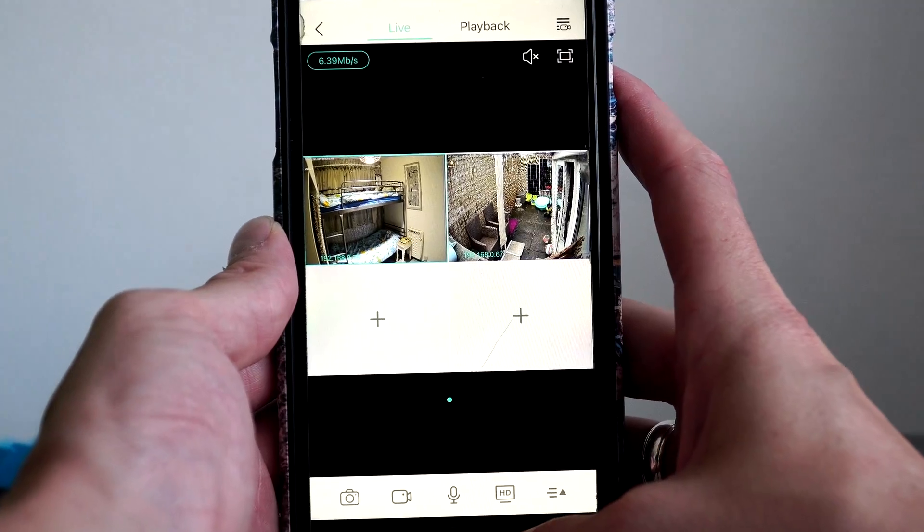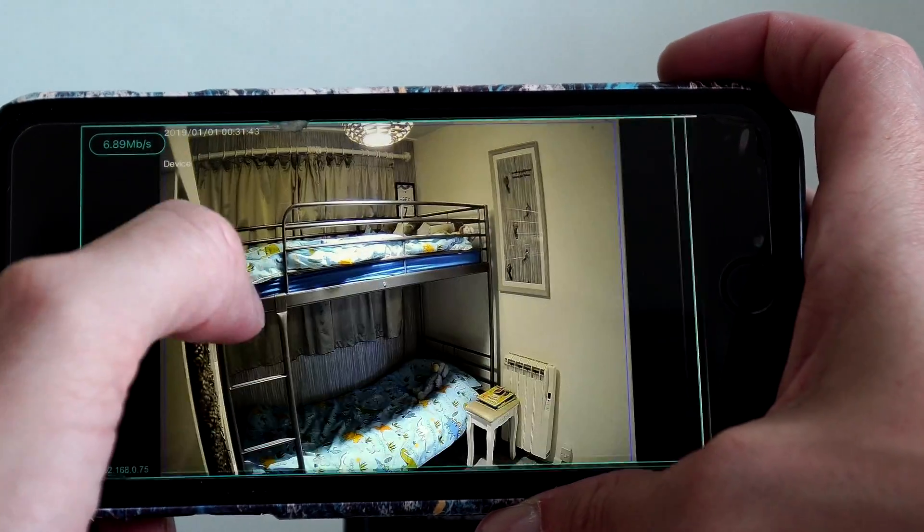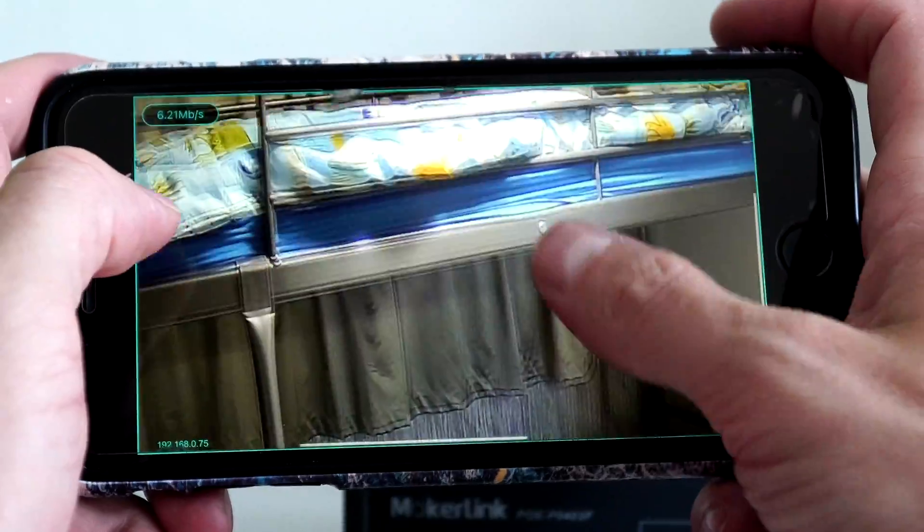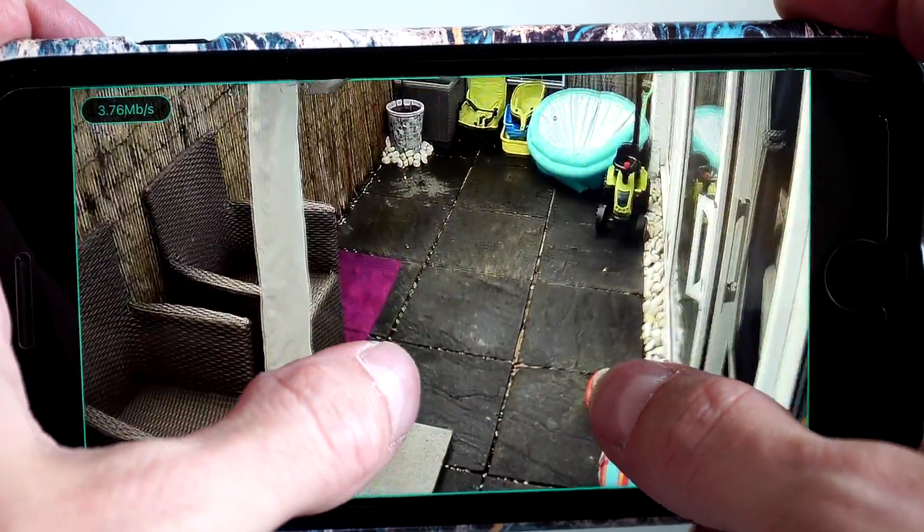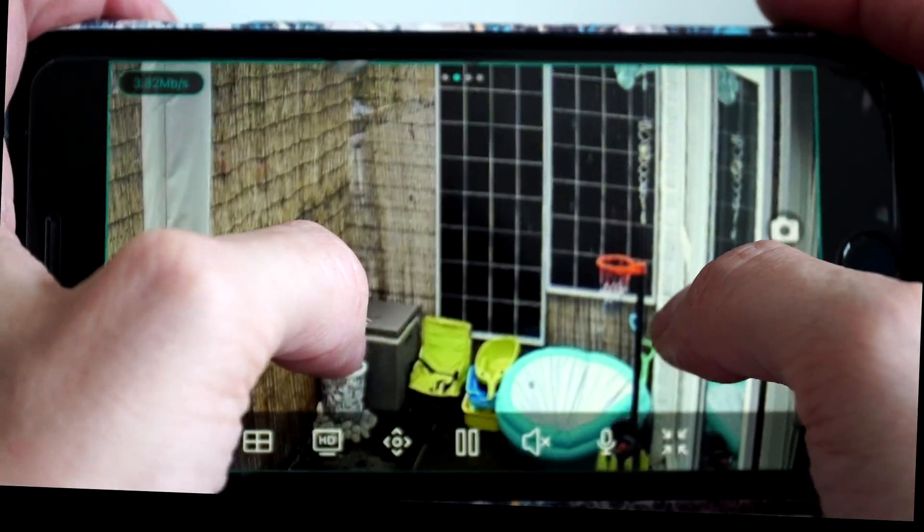Here I'll show you switching from HD to SD, different picture quality options that you have, and showing you that we've got two cameras set up so far. These cameras have a 2.8mm lens and a 95 degree wide view angle, which is what I like most about these cameras, allowing you to capture more in your field of view.